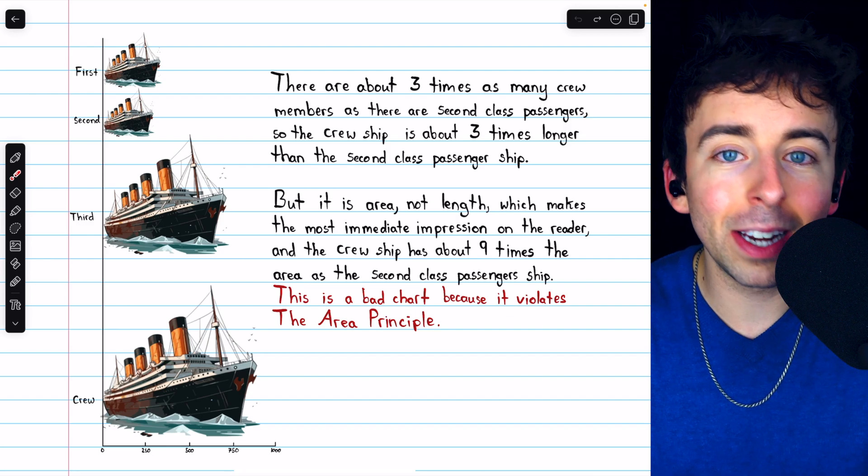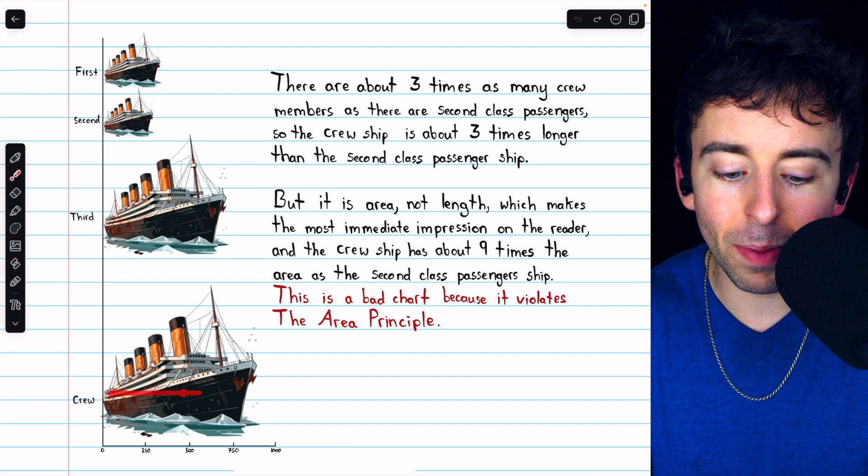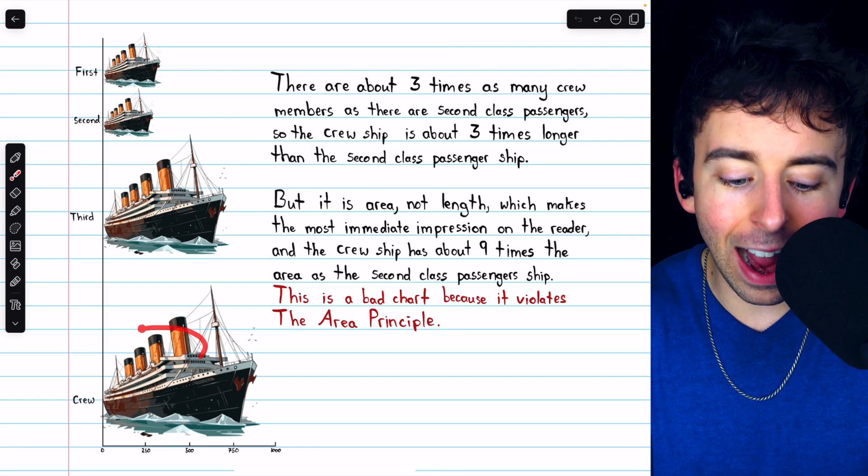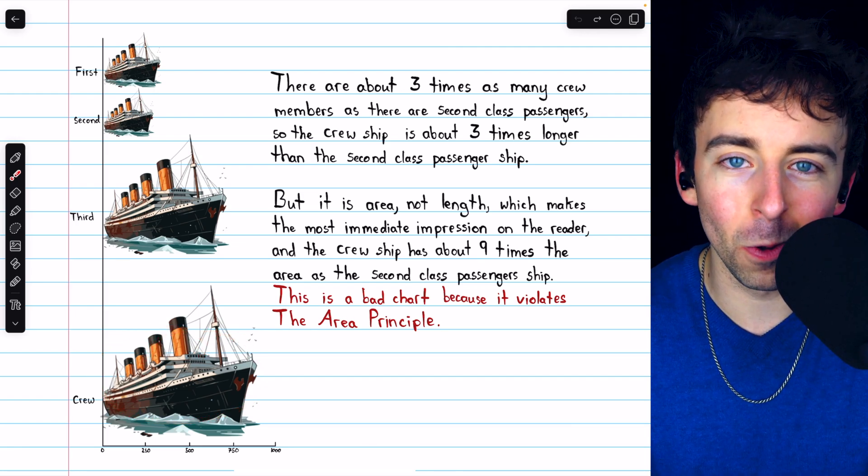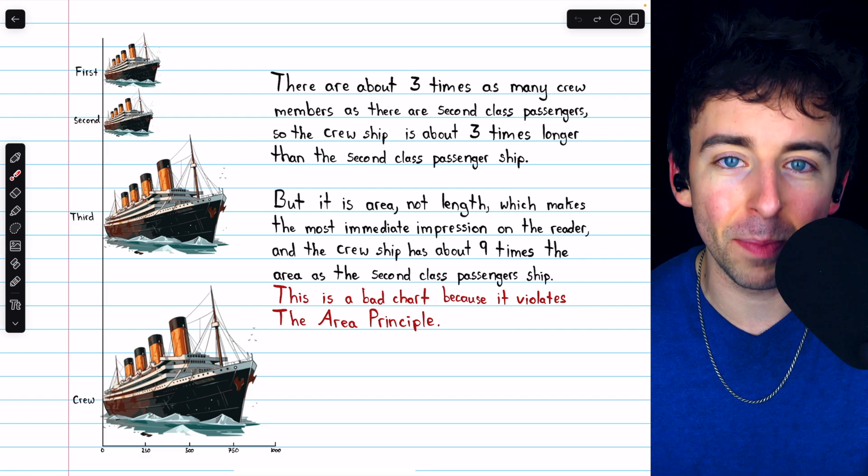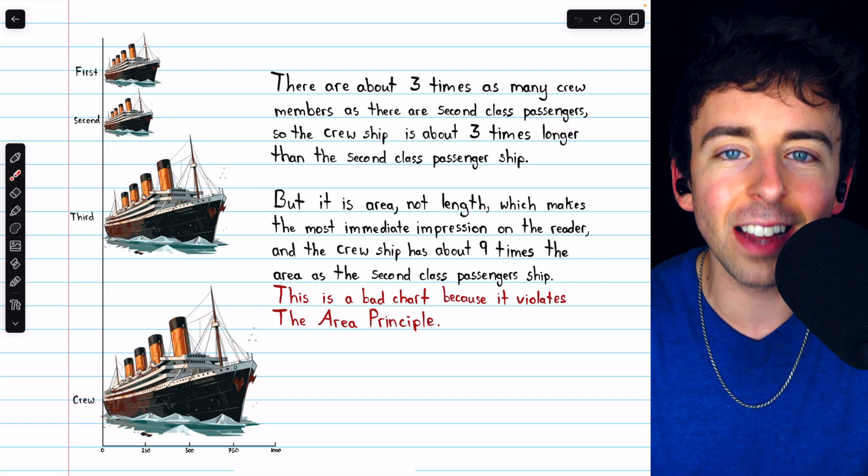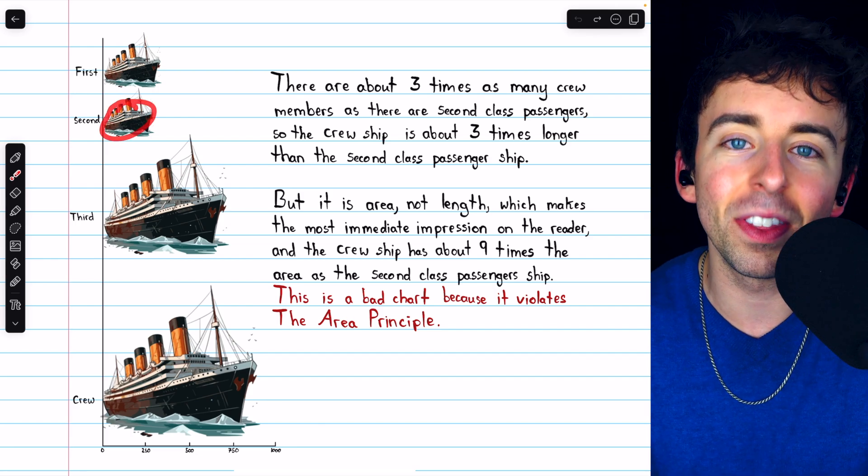So then we have a tremendous problem because although this ship is three times longer than this one, so the lengths are accurate, the area of this ship, since it's a whole ship picture that needs to be scaled up, the area of this ship is around nine times as big as the area of this ship.